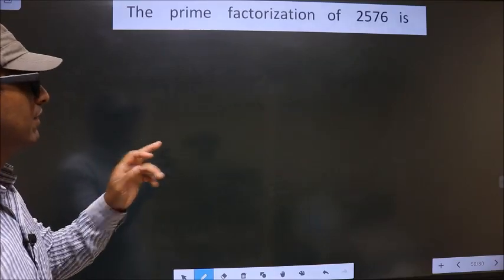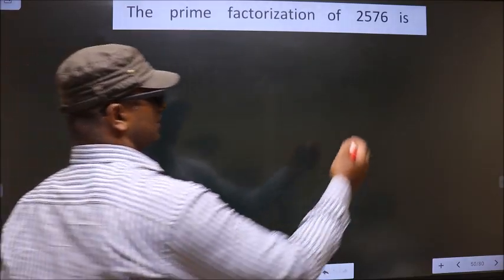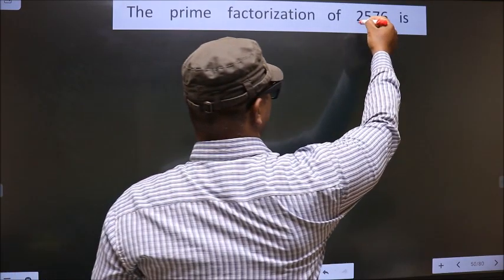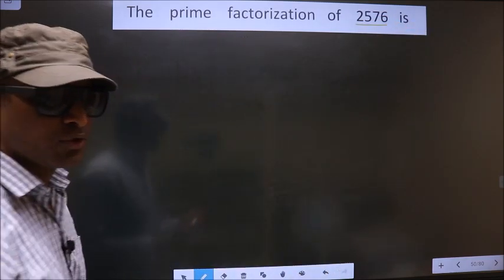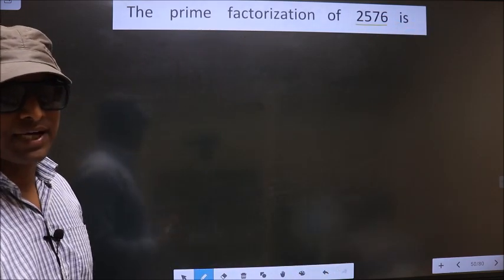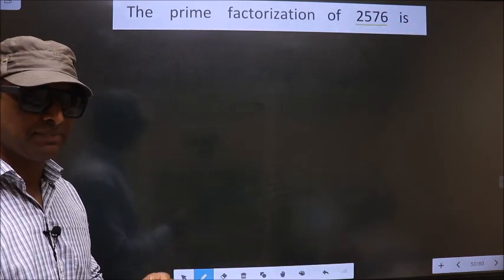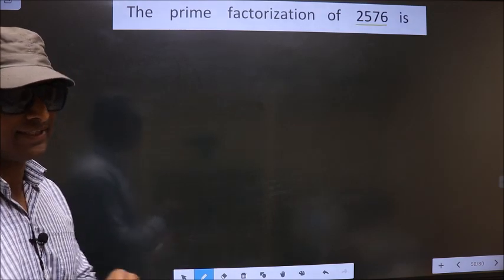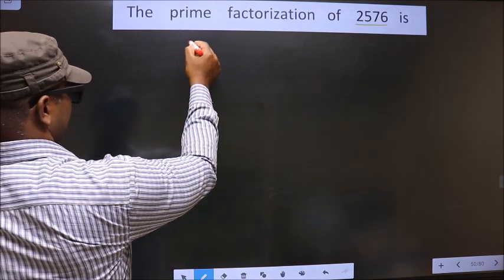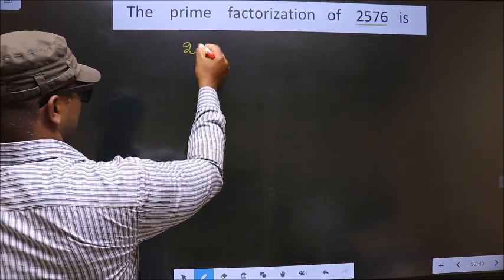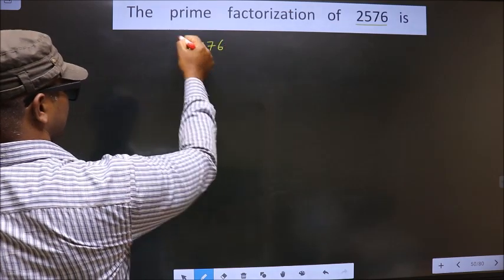The prime factorization of 2576 is — to do the prime factorization, first we should frame it in this way. That is 2576.